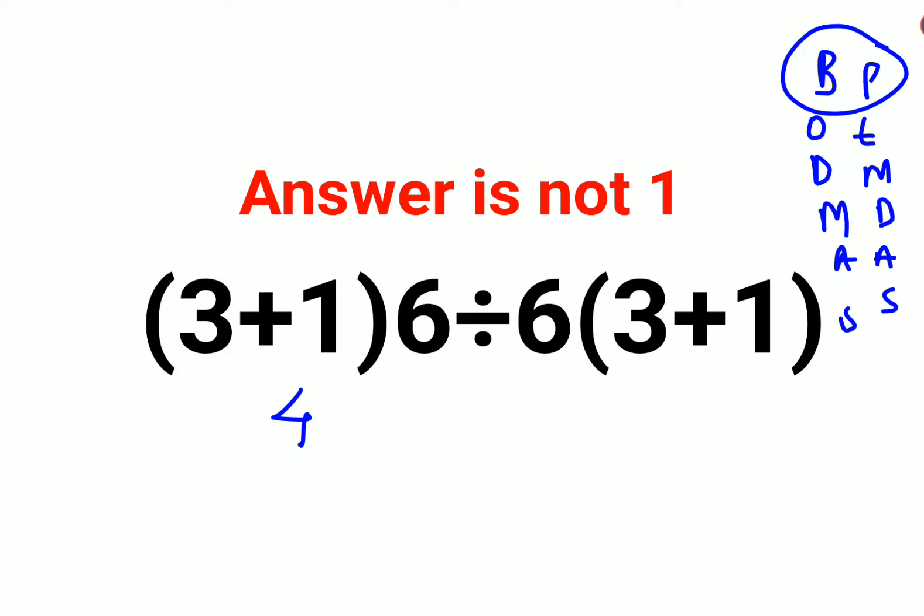Now since there is no sign between the bracket and 6, it means it is multiplication. So we will do multiplication into 6. We will divide by 6. And then here also there is no sign. So it is again multiplication and then 3 plus 1 which is 4.